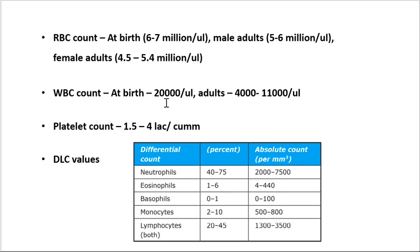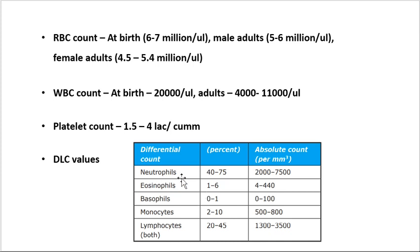Normal WBC count at birth is 20,000 per micro liter, and adults have 4,000 to 11,000 per micro liter. Normal platelet count is 1.5 to 4 lakhs per cubic mm.